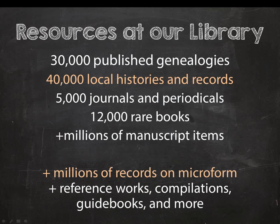In addition to our website offerings, our research library and archives holds 30,000 published genealogies, 40,000 local histories and records, 5,000 journals and periodicals, 12,000 rare books, millions of manuscript items, millions of records on microform, reference works, compilations, guidebooks and more. Today I'm just going to highlight the published local histories and microforms which contain vital records for New England, so stay tuned for more presentations on the above.